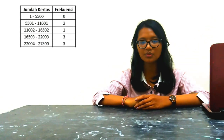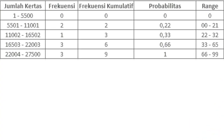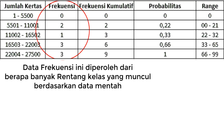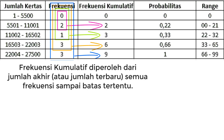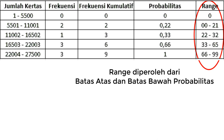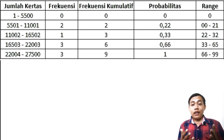Rentang 1 sampai dengan 5.500, frekuensinya 0. Untuk rentang 5.501 sampai dengan 11.001, frekuensinya 2. Dari 11.002 sampai dengan 16.502, frekuensinya adalah 1. Dari 16.503 sampai 22.003, frekuensinya adalah 3. Lalu dari 22.004 sampai dengan 27.500, frekuensinya adalah 3. Lalu frekuensi kumulatif dari data tersebut dapat dilihat pada tabel di samping. Demikianlah data yang kami pergunakan untuk nantinya dijadikan acuan untuk simulasi pada penelitian kami.